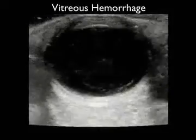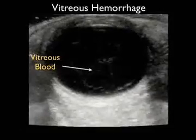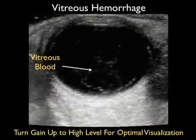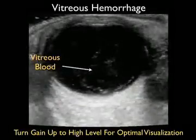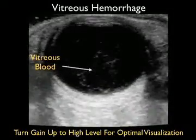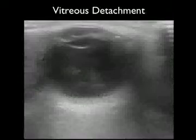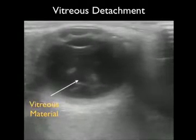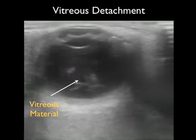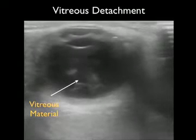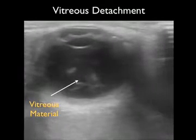This ultrasound from a patient with multiple floaters in the right eye shows the classic appearance of vitreous blood — speckles of vitreous material within the vitreous cavity. To best visualize vitreous hemorrhage, we may need to turn the gain up to a high level. Another patient with painless loss of vision shows vitreous material accumulated in the posterior aspect of the eye — the classic appearance of vitreous detachment — with prominent speckles or floaters as the patient looks from side to side.